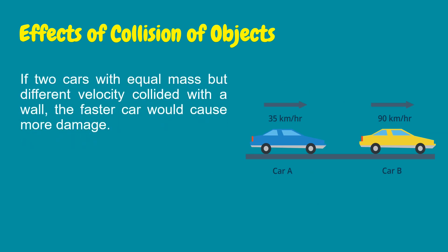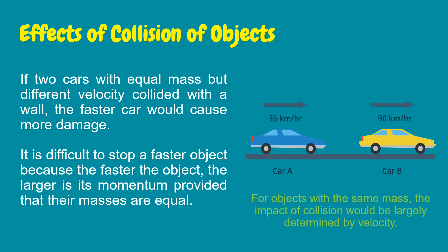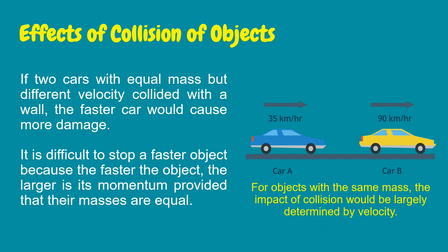If two cars with equal mass but different velocities collide with a wall, the faster car would cause more damage. It is difficult to stop a faster object because the faster the object, the larger its momentum, provided that their masses are equal. For objects with the same mass, the impact of collision is largely determined by velocity.